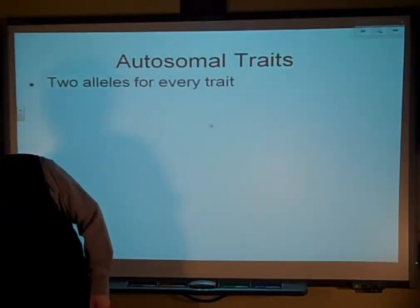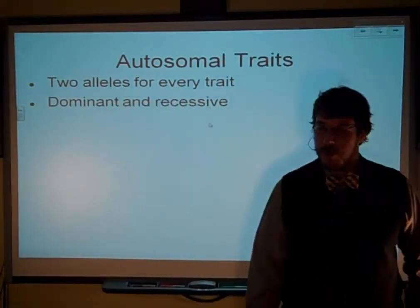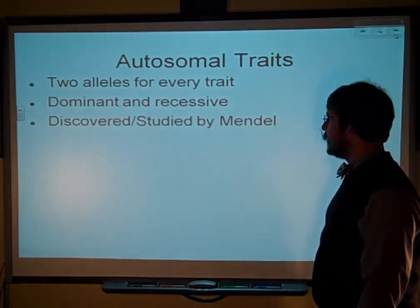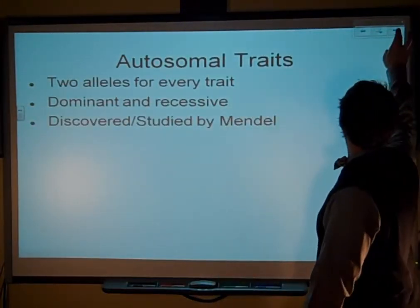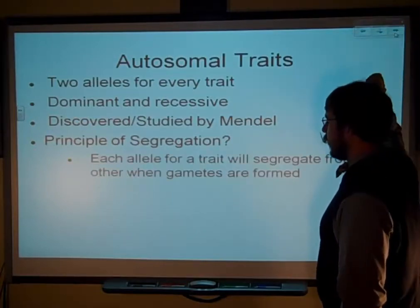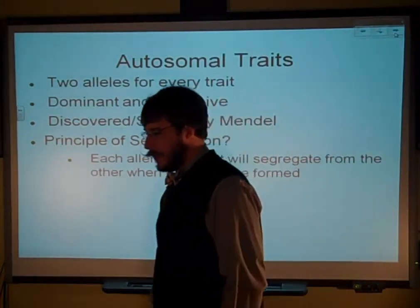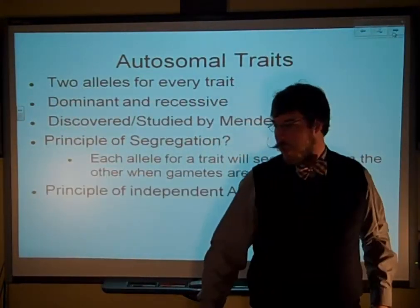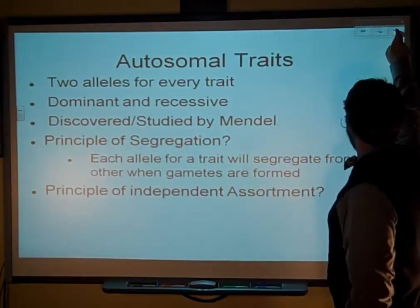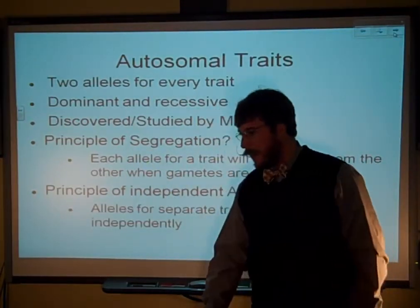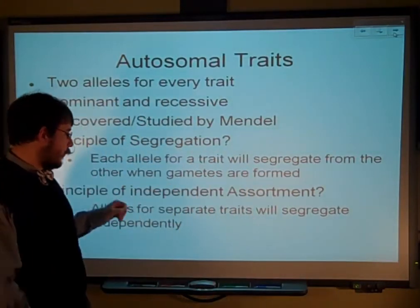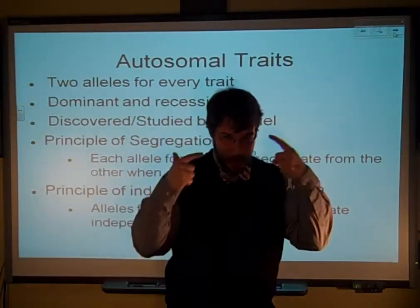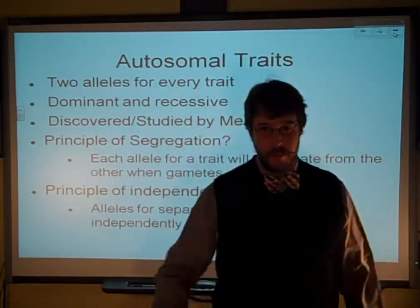Just a quick recap: you've got your autosomal traits, you have two alleles for every one of those traits. The alleles can be dominant or recessive. These are the ones discovered by Gregor Mendel — the principle of segregation, where the traits will segregate away from each other, meaning the two alleles don't go together. And then you have independent assortment, which basically says the alleles will segregate from each other independently, so my brown hair and my brown eyes don't actually have to be linked together.